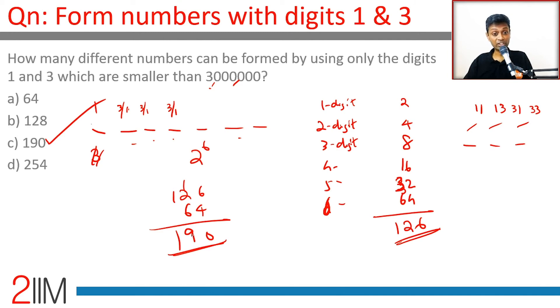Eliminate half of them, or add 2^6 numbers. 2^6 plus 126, which is 190.